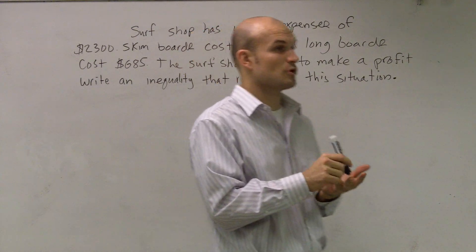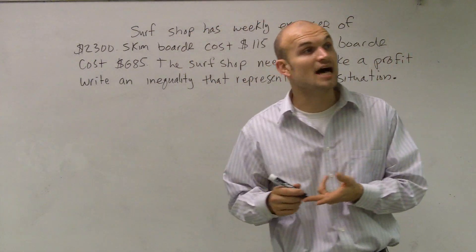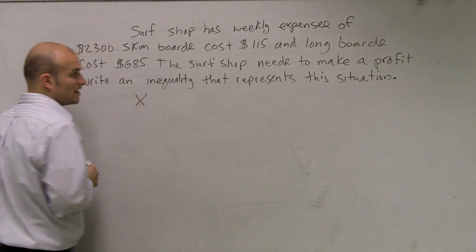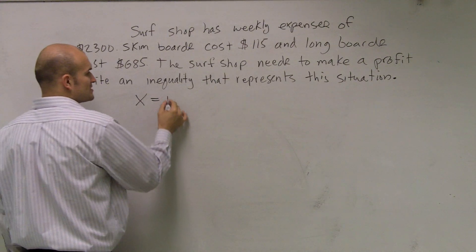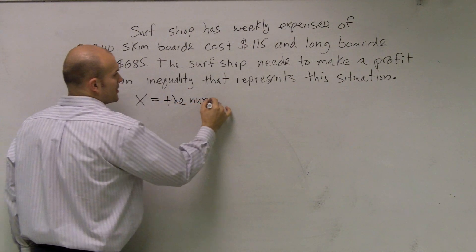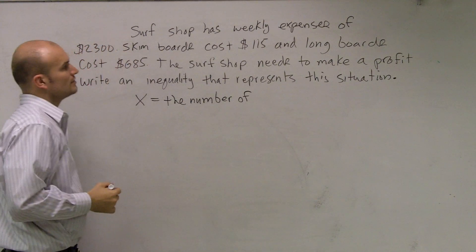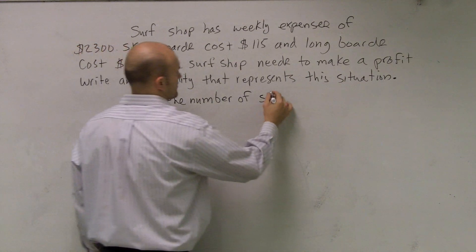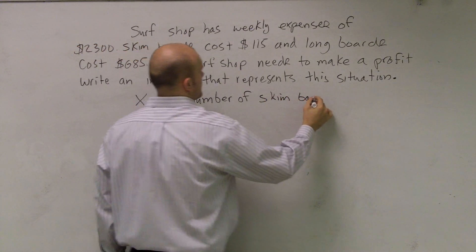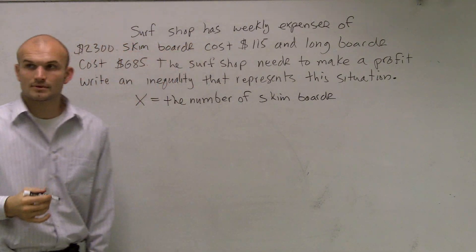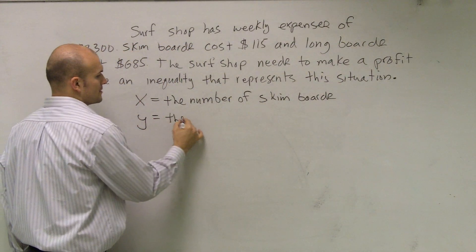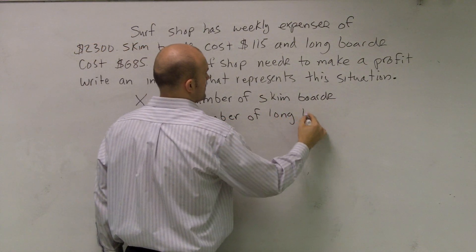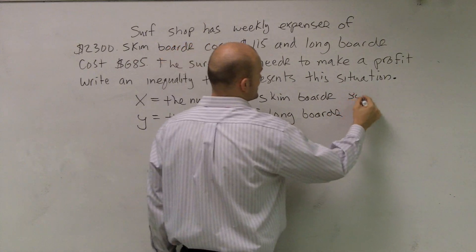All we know is what the long boards cost and what skim boards cost, but we don't know how many they need to sell to make a profit. So we need to set up variables. We can say x is going to represent the number of skim boards, and y will represent the number of long boards — and these are going to be sold.